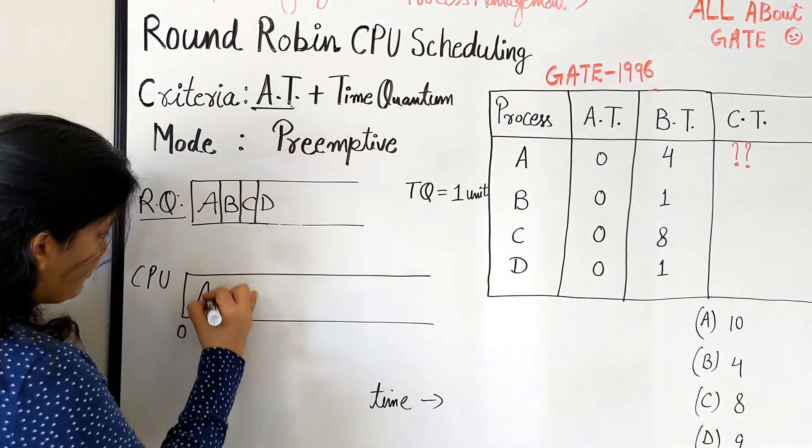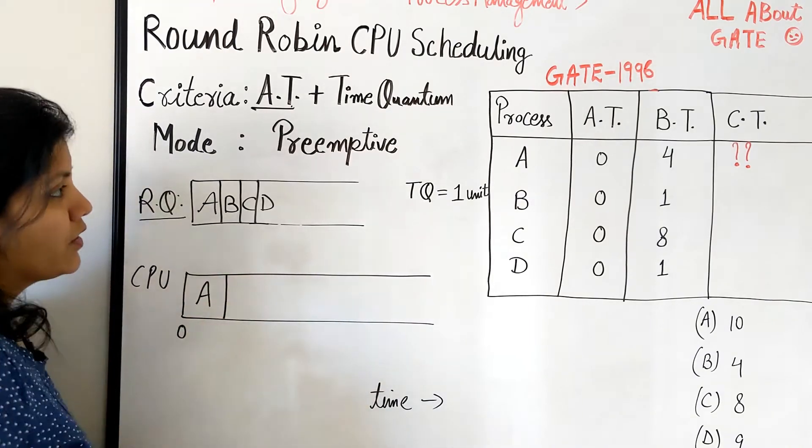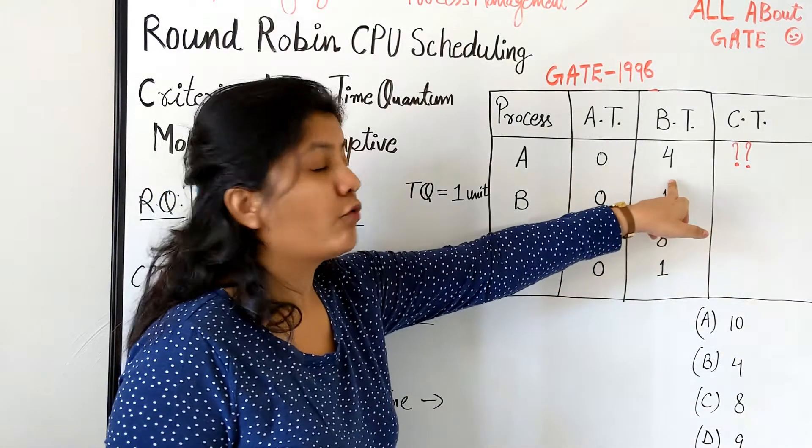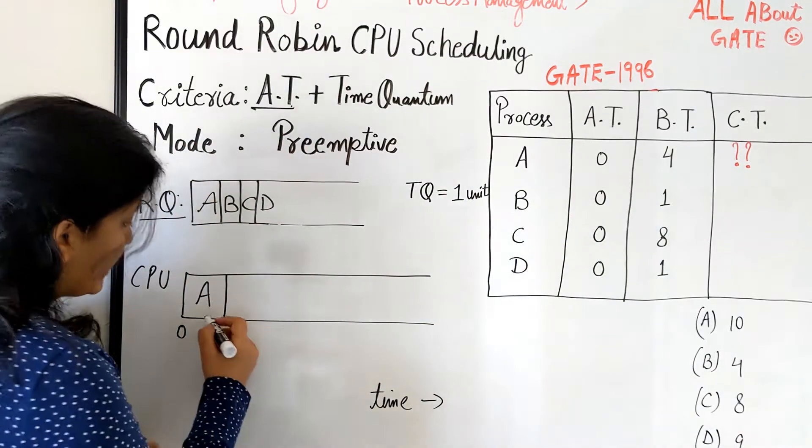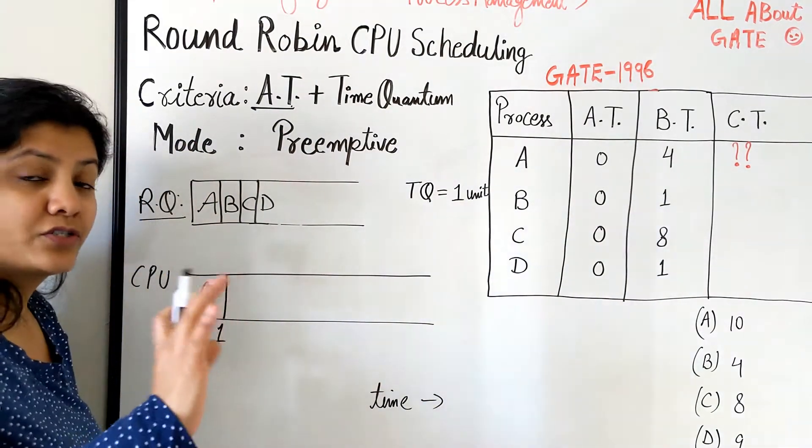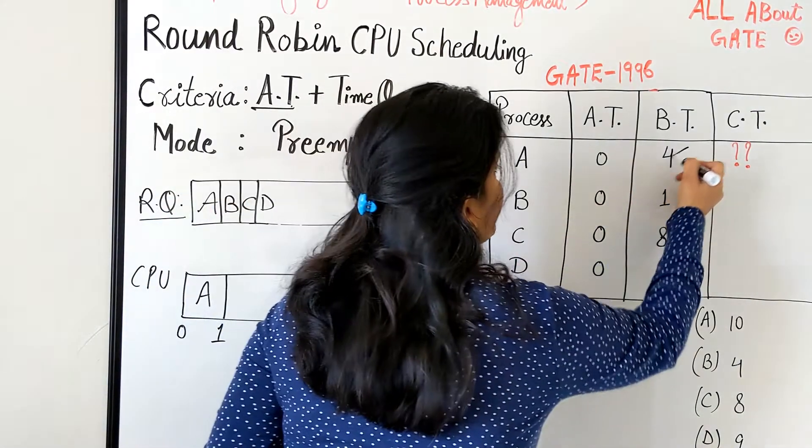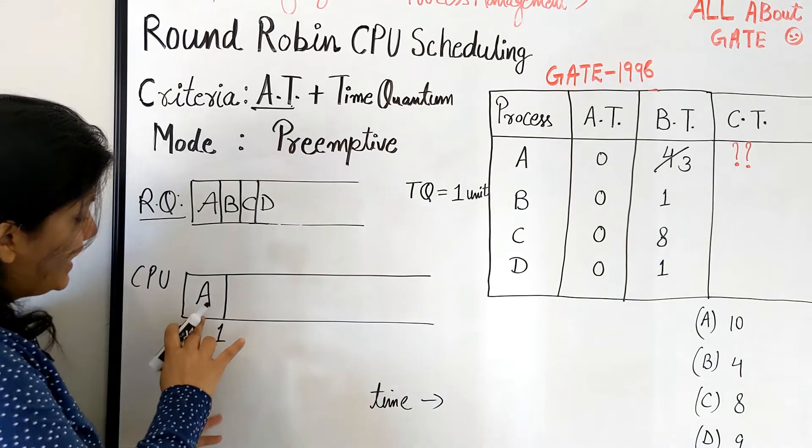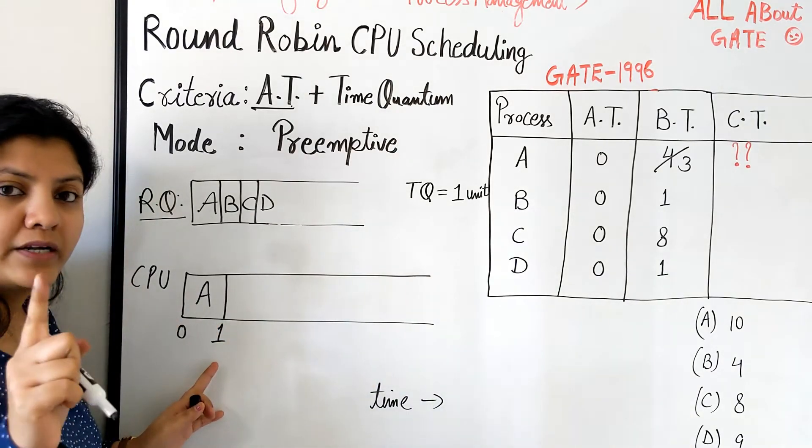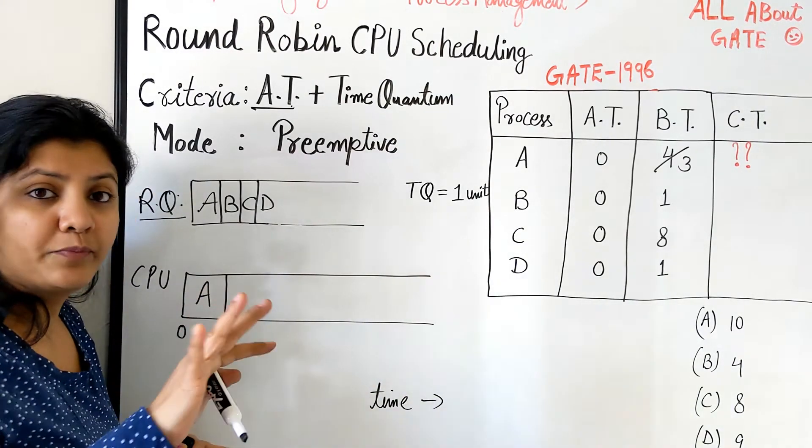So we should do process A at time 0. Now everyone, we know that it requires four bursts but because we can schedule only for one quantum, so that becomes from 0 to 1 it gets scheduled and its burst time becomes now 3. Correct? 3. Now you see it got finished only for one quantum. It is not yet done. It is not terminated.